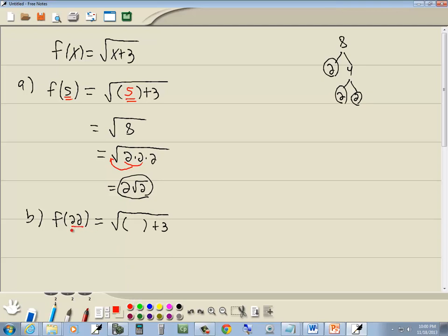Now whatever's inside the parentheses right here we'll put in right there. So we put 22 there. 22 plus 3 is 25.